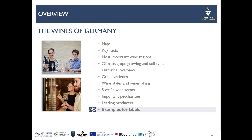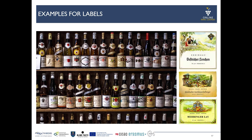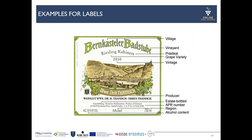To finish this presentation on the topic, I will give you some further examples of typical labels from German wines — Mosel and Rheingau in particular. Here is a typical old-school label with the terms we have already discovered.